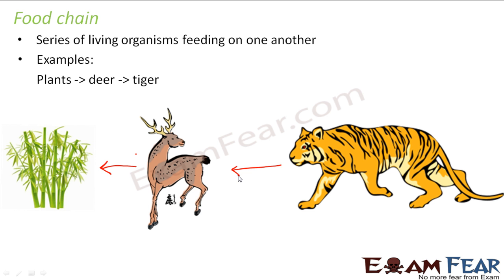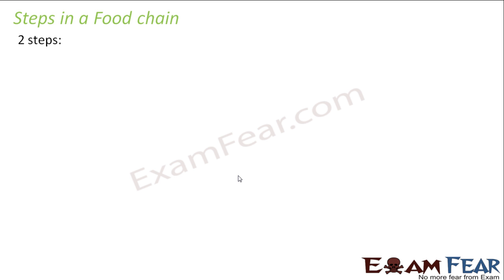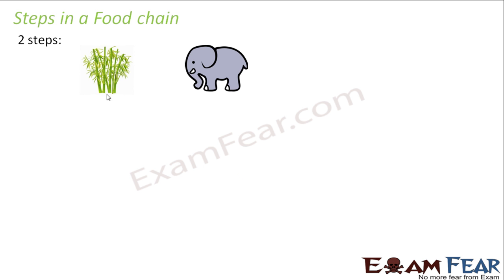Now it is not only two or three animals involved in a food chain — there can be many animals involved. Let us look at the steps in a food chain. A food chain can have two steps, three steps, or four steps. Let us look at the smallest and simplest food chain — a food chain with two steps. The first step is the plants, and the next one is elephants feeding on plants. Nobody else is feeding on the elephants, so it is a small two-step food chain involving two living organisms.